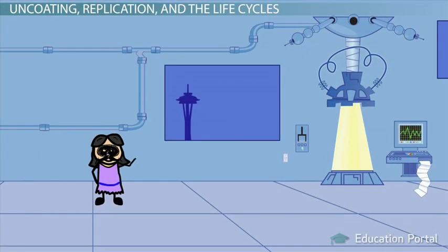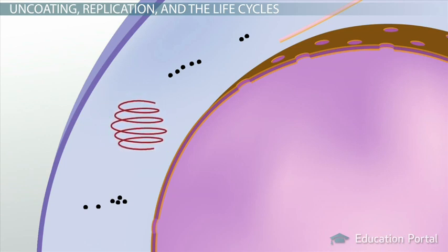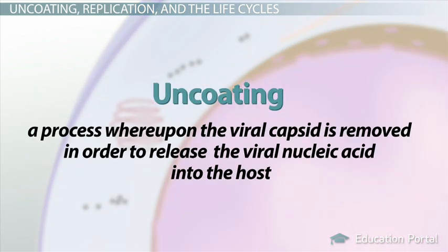Now that we're inside the lab, there's no point in keeping those masks or coats on. We can remove them to reveal who we are since no one from the outside can see us. Viruses, upon penetration into the cell, will also uncoat themselves by removing their viral capsid and thereby unmask the nucleic acid inside. This entire process is called uncoating, and again is a process whereupon the viral capsid is removed in order to release the viral nucleic acid into the host.